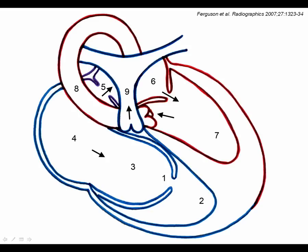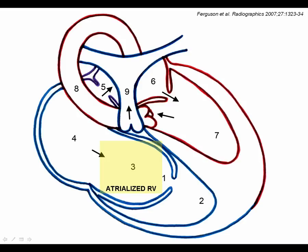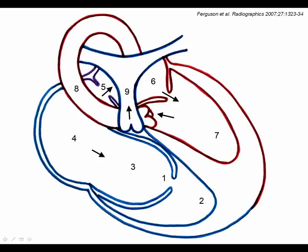In the left heart, the mitral valve is normally positioned in the atrioventricular groove, allowing efficient antegrade flow of oxygenated blood from the left atrium (labelled 6) to the left ventricle (7) and onwards through the aortic outflow tract. By contrast, the tricuspid valve (labelled 1) is positioned further towards the cardiac apex, generating an atrialized segment (labelled 3) in addition to the normal right atrium, and a commensurate decrease in right ventricular chamber volume. In this schematic, there is an associated atrial septal defect (numbered 5), allowing a right-to-left shunt of deoxygenated blood.